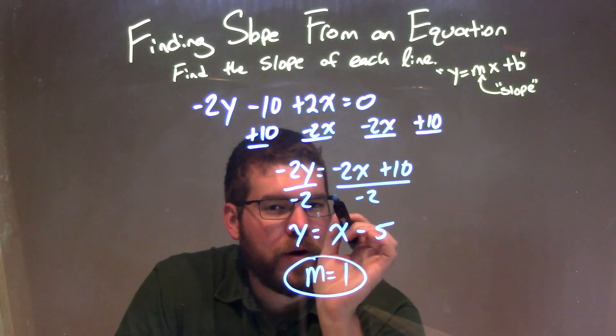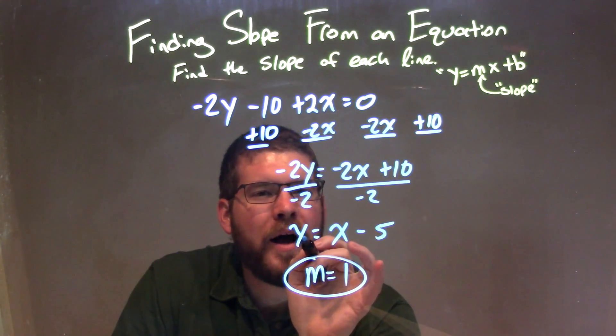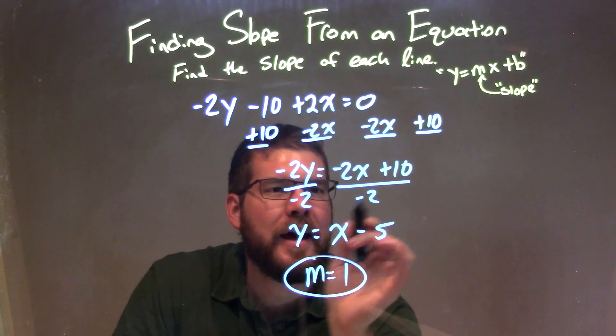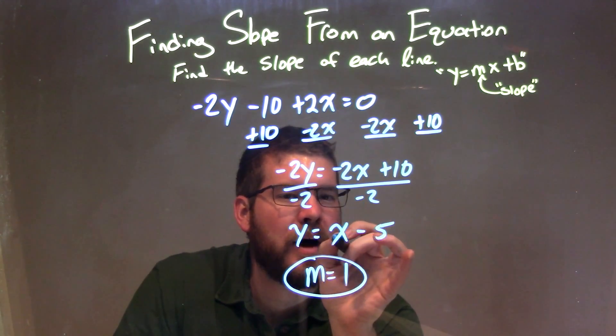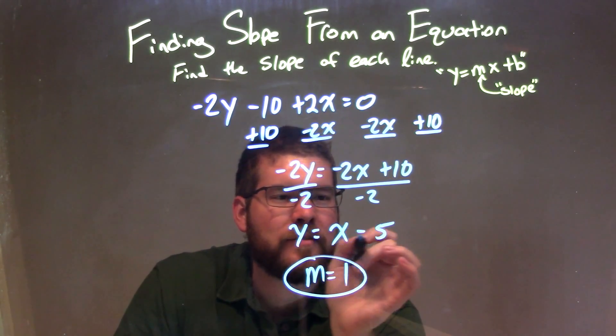So continuing toward the goal of getting y by itself, I divide by negative 2 on both sides. This gives me y isolated on the left, and negative 2x divided by negative 2 is a positive 1x, and 10 divided by negative 2 is a negative 5.